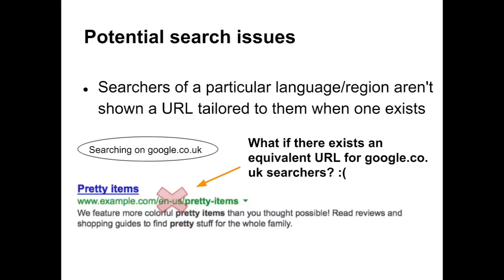Let's begin with potential search issues. The first issue: imagine a searcher in England on google.co.uk performing a query for pretty items. The searcher might see search results highlighting a .com URL. This seems like a fine result. However, it becomes a less relevant result if there exists an equivalent .co.uk URL tailored for the UK user. The first potential issue is when search results omit a URL customized for the user's language when one exists.